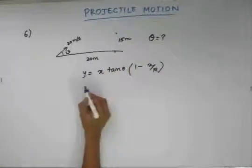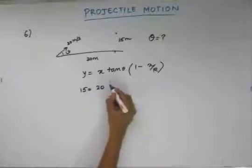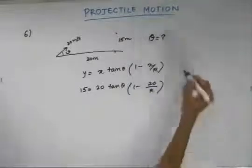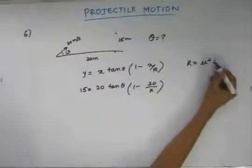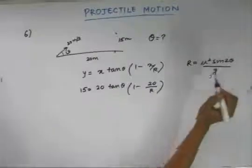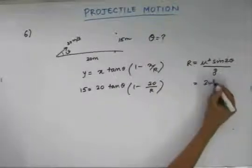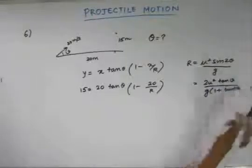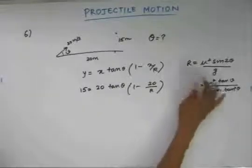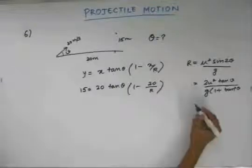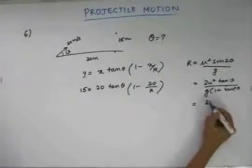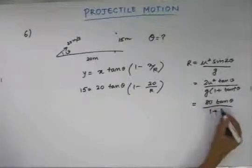Substituting the values, 15 equals 20 tan theta times (1 minus 20 by R). The range R is given by u squared sin 2 theta by g, which can be written as 2u squared tan theta divided by g(1 plus tan squared theta). Since u equals 20 m/s, this becomes 800 by g, so R equals 80 tan theta divided by (1 plus tan squared theta).